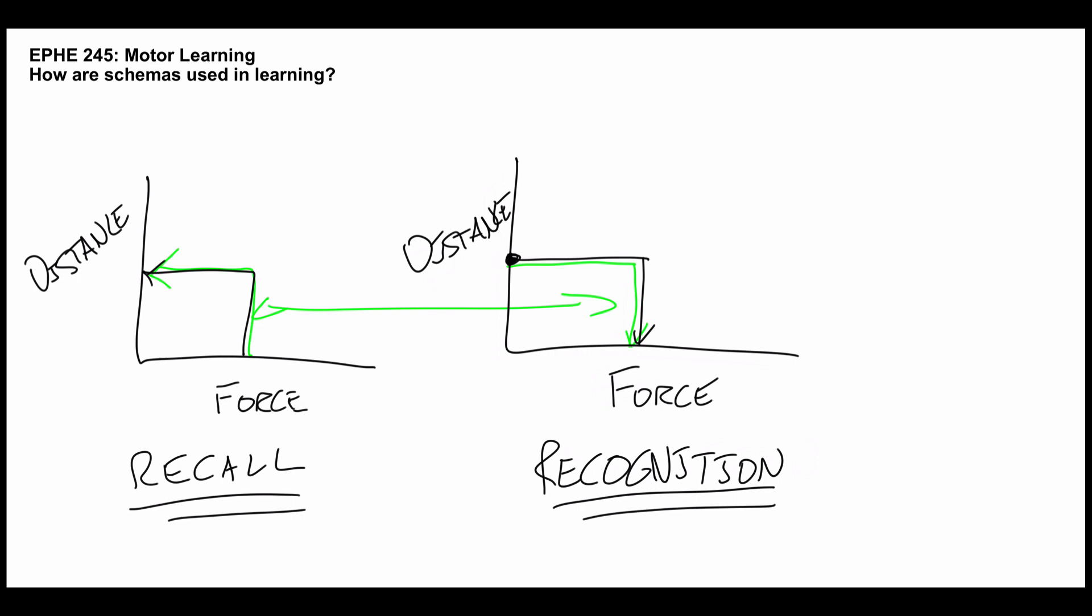Indeed, this back and forth comparison, trial after trial allows you to optimize your schema. The recognition schema is used to optimize the recall schema and the recall schema generates a movement which the recognition schema can evaluate.